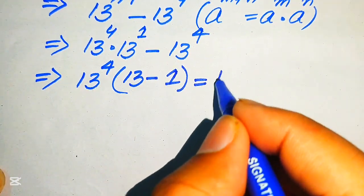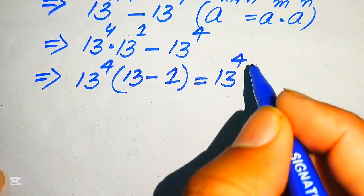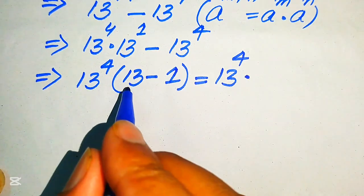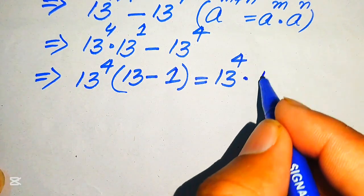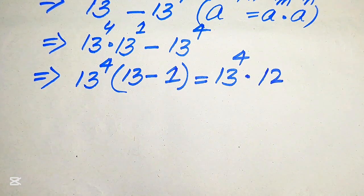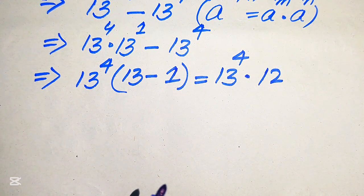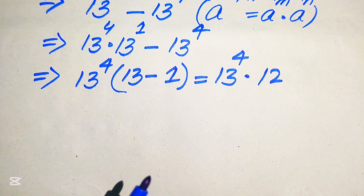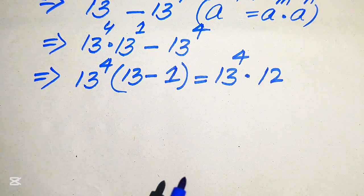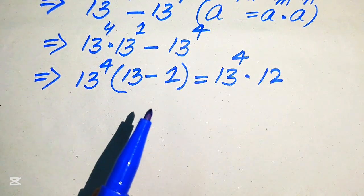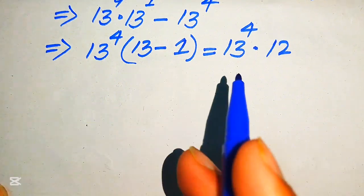When we take common 13 to the power of 4, we get 13 minus 1 inside the bracket. So this equals 13 to the power of 4 multiplied by 12. In order to write the algebraic expression in simplified form, we now need to find the value of 13 to the power of 4.